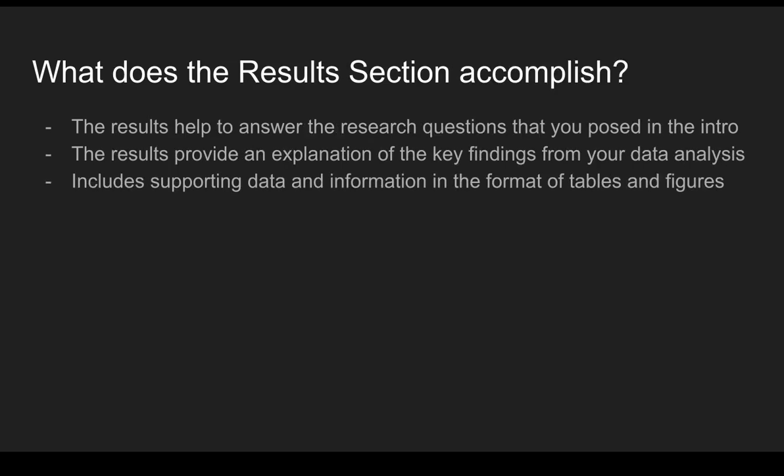The results section of a capstone paper accomplishes a few things. First, you've established context for your research in the introduction and literature review, and you've identified research questions. The results section helps provide an answer to those research questions posed in the introduction. The results provide an explanation of the key findings from your analysis. You might not present every finding — you want to focus on the key findings, the ones that really shed light on the questions you were attempting to answer through your project.